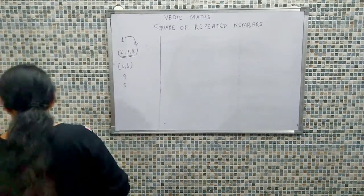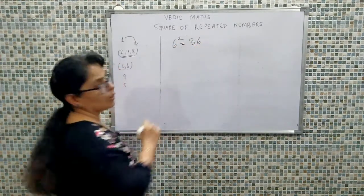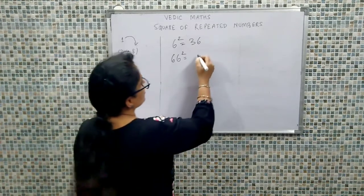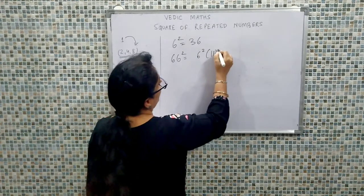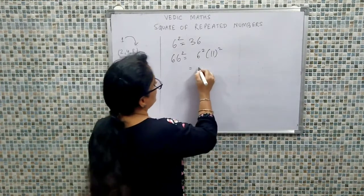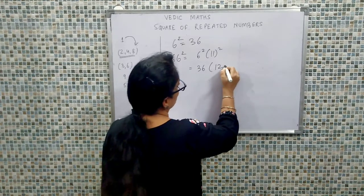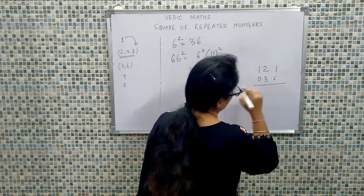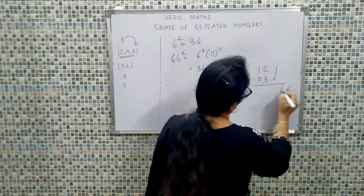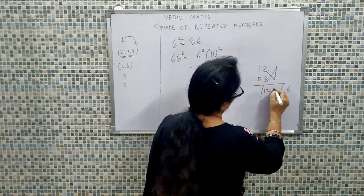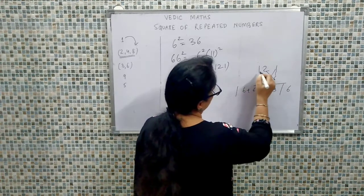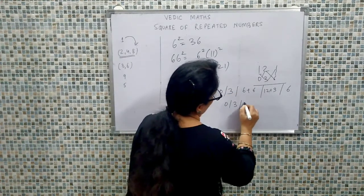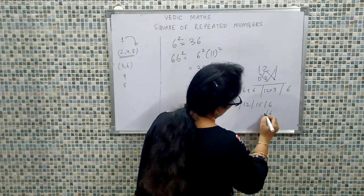So in the square of 3s, zero and nine are fixed, and 1 and 8 split depending on how many 3s we have. Now proceeding to calculate 6 ka square. 6 ka square kitna hota hai? 36. Ab 66 ka square nikaalna hai — 66 = 6 × 11, so 6 squared times 11 squared — that is 36 into 121, giving us 4356.